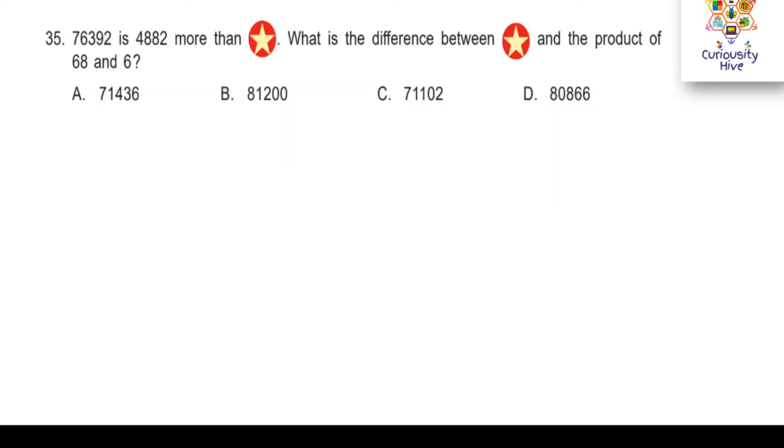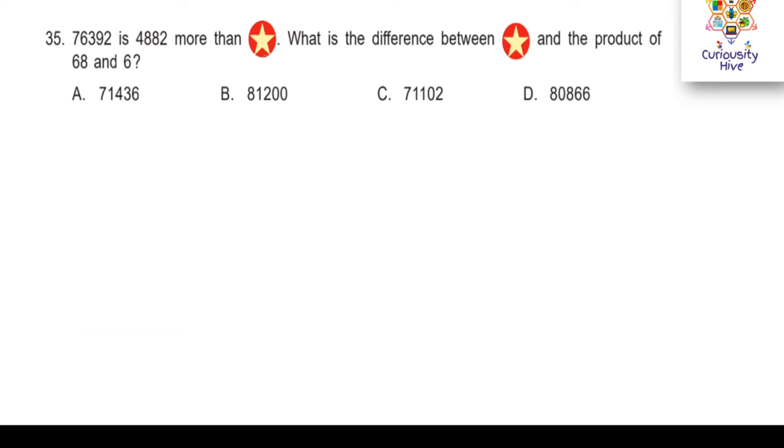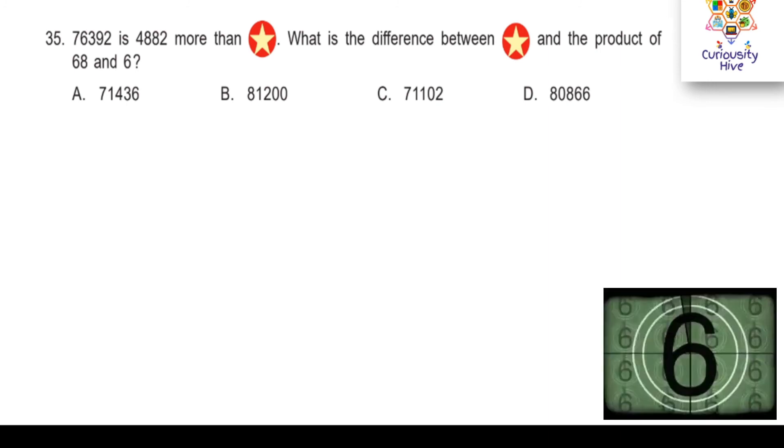Now, last and final question in this section. Let's solve this. 76,392 is 4,882 more than star. What is the difference between star and the product of 68 and 6? Try to solve it. I will give you some time.